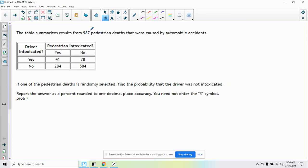Okay, so it says the table summarizes results from 987 pedestrian deaths that were caused by automobile accidents. If one of the pedestrian deaths is randomly selected, find the probability that the driver was not intoxicated.